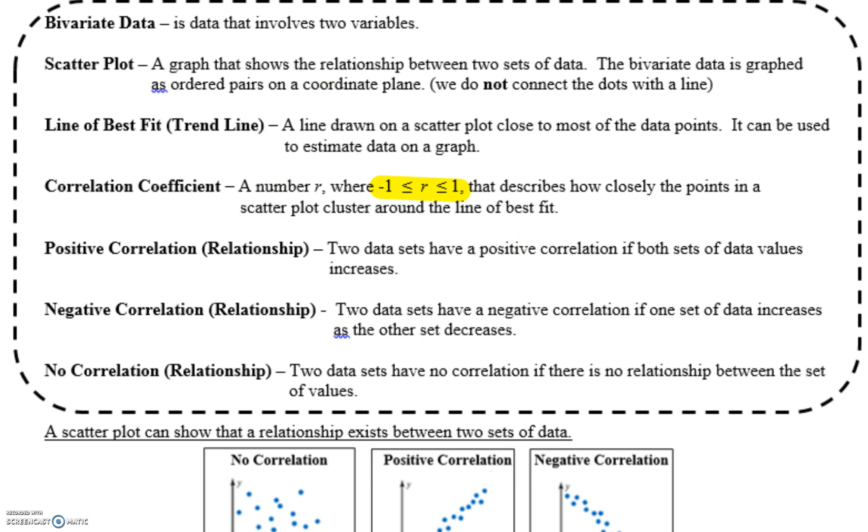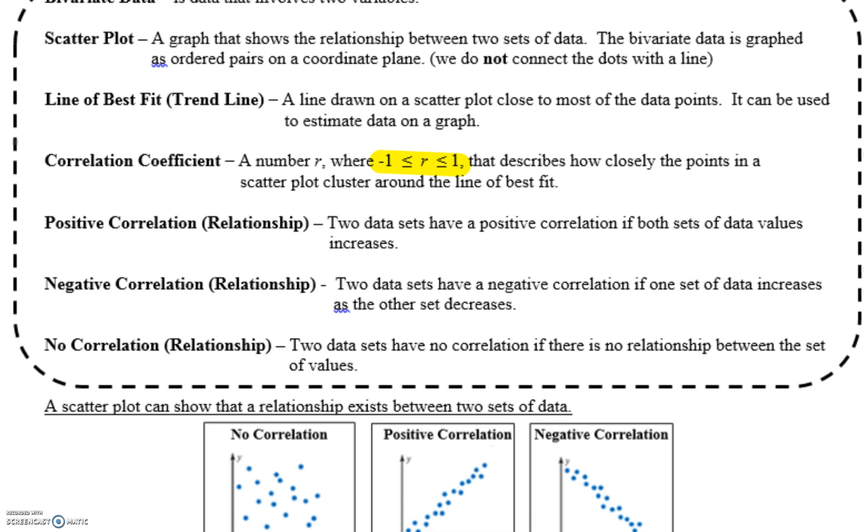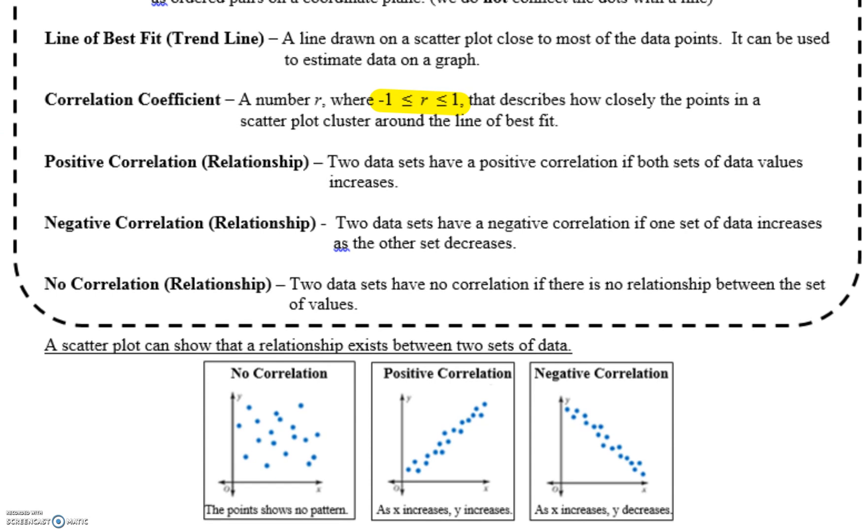So a positive correlation shows that two sets have a positive correlation if both sets of data values increases. So as one increases, so does the other. A negative correlation is two data sets that have a negative correlation if one set of data increases as the other set decreases. And no correlation is just two data sets that have no correlation, which means there's no relationship between the two sets of values.